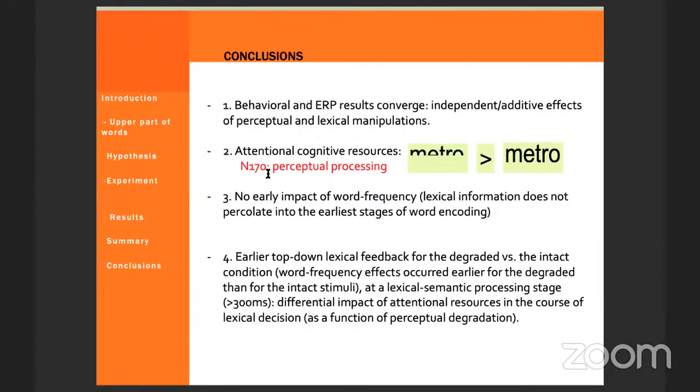So data favors the first scenario. The upper part of words are rapidly normalized in terms of orthography knowledge. The cost is observed in the earliest stages of processing as shown by the early ERP effects and also in the RT measures. And the earlier effects of word frequency in the degraded words than in the intact words may reflect the impact of attentional resources in the course of lexical decision, but not in the early encoding stages of processing.